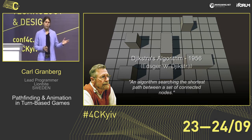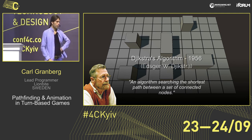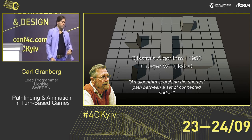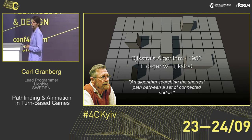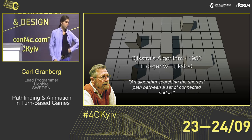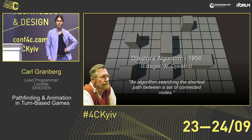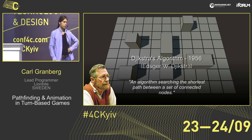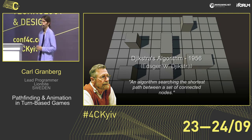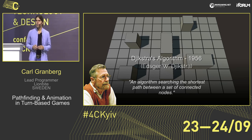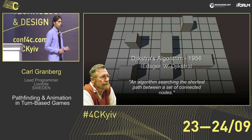This is a map that we want to find a path on. This is the father of pathfinding algorithms — his name is Edsger W. Dijkstra. In 1956 he made Dijkstra's algorithm, which is an algorithm for finding the shortest path on a set of connected nodes, or what we also call a graph.